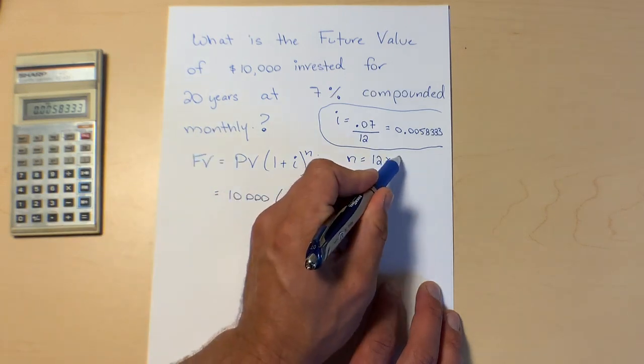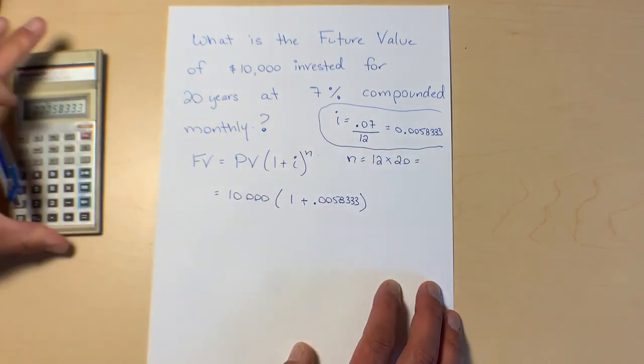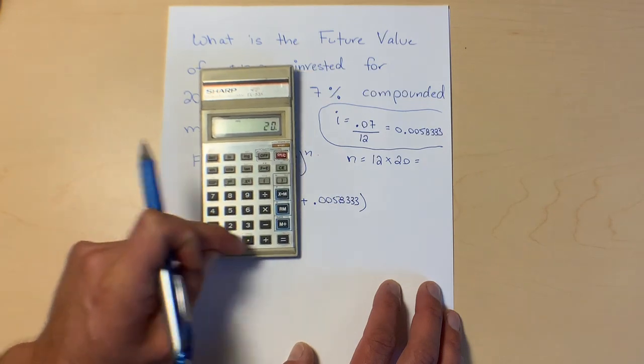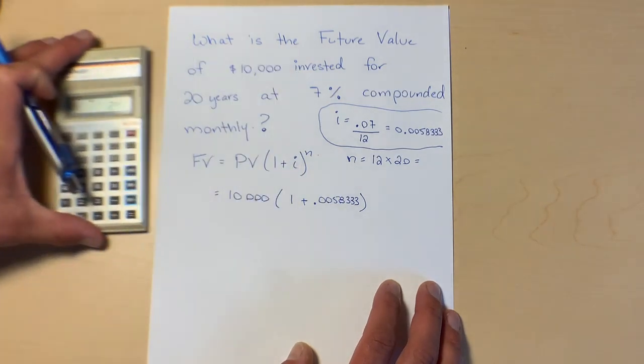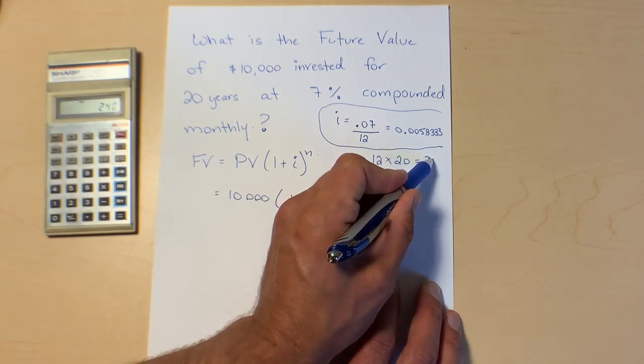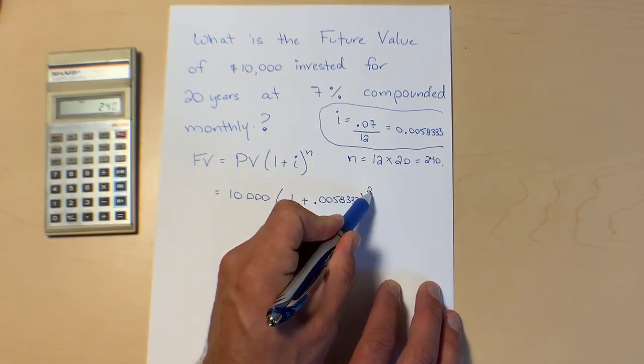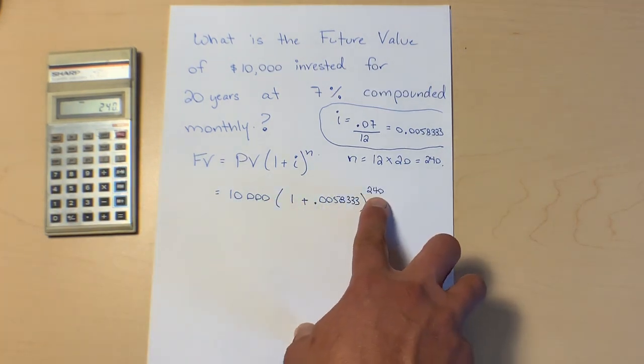Okay, so n, we have 12 compounds per year, compounded monthly, and we're going to do that for 20 years. So I'm going to have 12 times 20. Our n, let's do that: 12 times 20, 240 compounds.